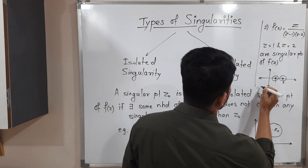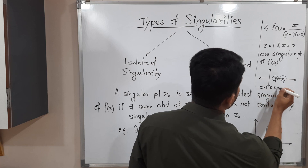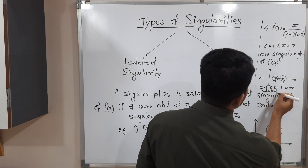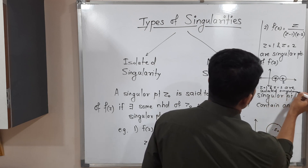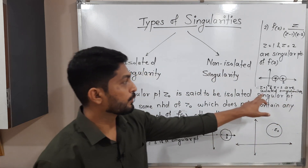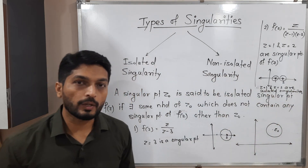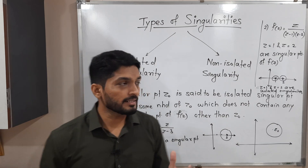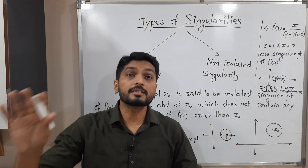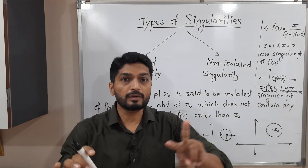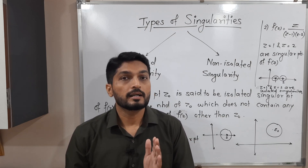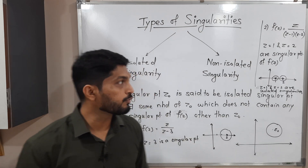So z = 1 and z = 2 are isolated singularities. Let us understand the dictionary meaning of isolated: separate, distinct — they are not very close to each other. If you have such singular points that can be separated from one another, we call them isolated singularities.